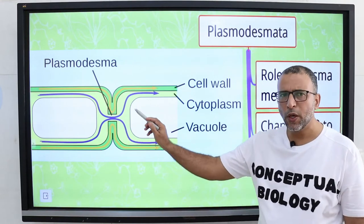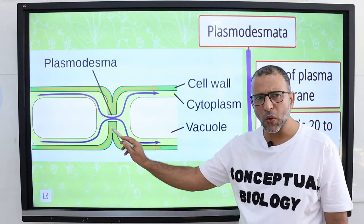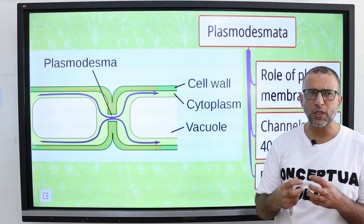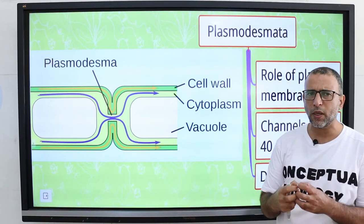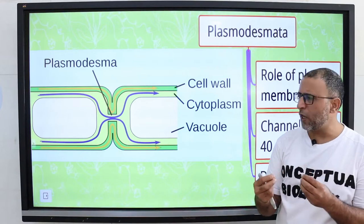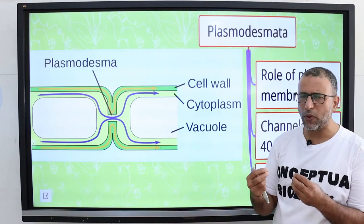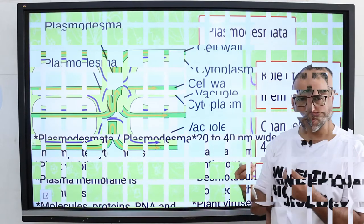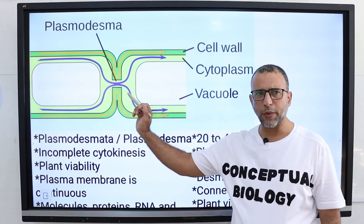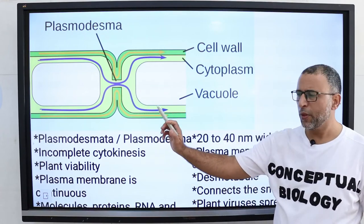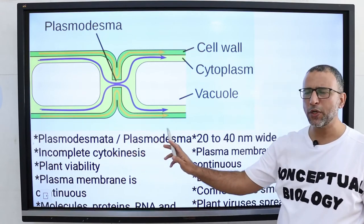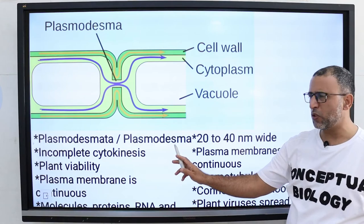These structures may allow neighboring cells to form strong connections with one another and establish rapid communication between adjacent cells. Plant cells are connected by Plasmodesmata. Plasmodesmata is the plural form; Plasmodesma is the singular form.